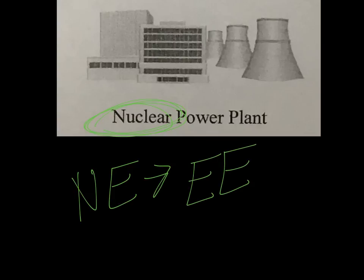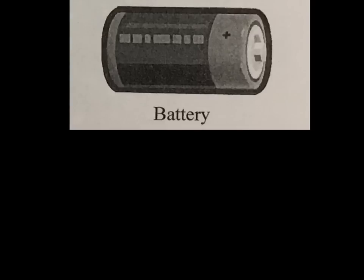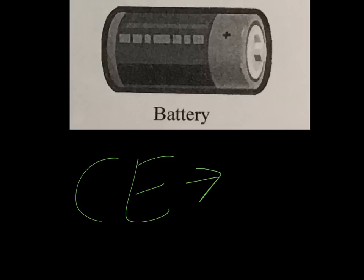Here we have a battery. We already talked about a battery with the race car, but let's review: what energy do all batteries start with? They all start with chemical energy, and then all batteries go from chemical to electrical energy. That is the energy transformation in a battery.